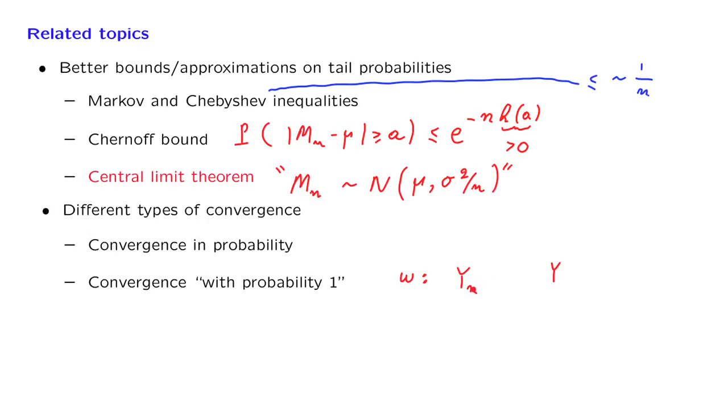Look at the values of the random variable yn under that particular omega. And look at that sequence of values, the values of the different random variables under that particular outcome. Under that particular outcome, y also has a certain numerical value. And we're interested in whether this convergence takes place as n goes to infinity.